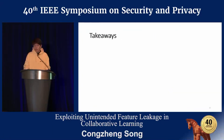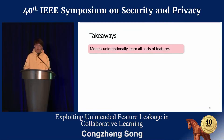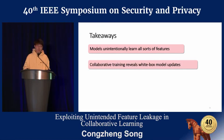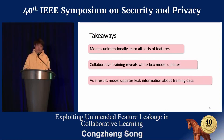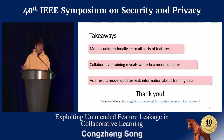The takeaways are: we have shown that a model can unintentionally learn all kinds of features — features that are helpful for inferring properties uncorrelated with its learning task. On the other hand, collaborative training can reveal white-box model updates to its participants and server. As a consequence, whoever can access the model updates can learn information about the participants' training data. Thank you very much, and our code is also available on my GitHub account.